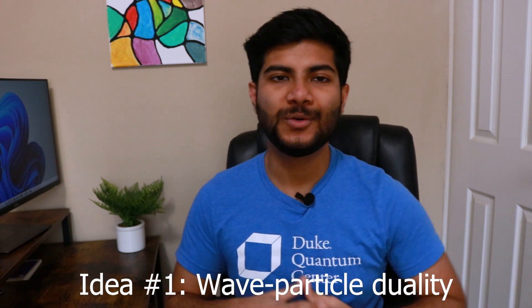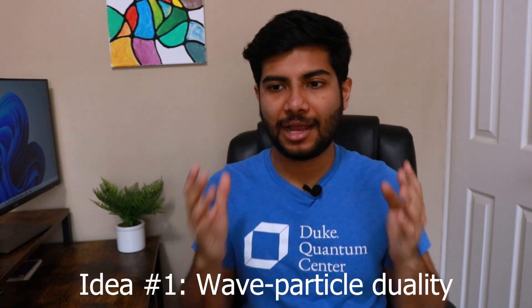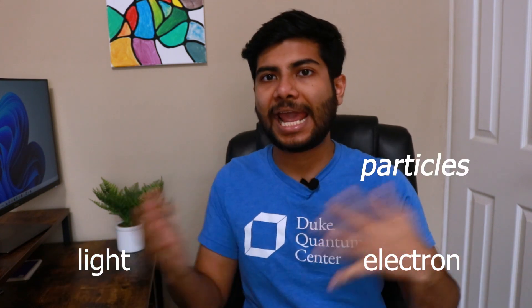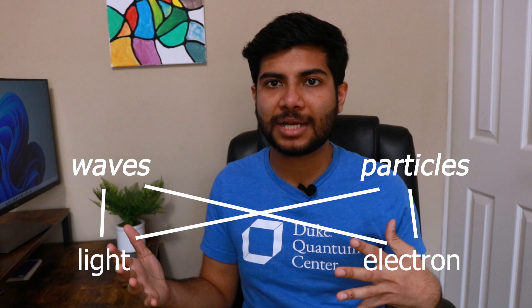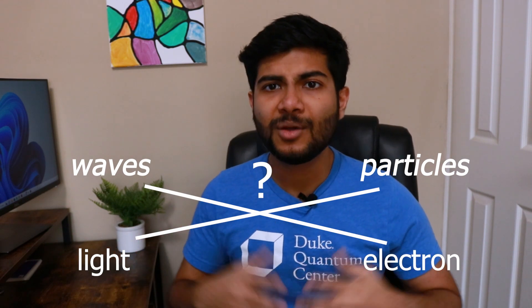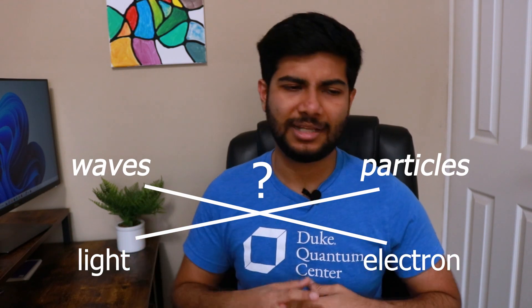So let's start with the main ideas of quantum mechanics. One big idea is wave-particle duality, which says that particles like electrons and light or radiation both behave like particles and waves at the same time, or depending on the situation. Which is really weird — like, why would electrons behave like ripples in a pond?